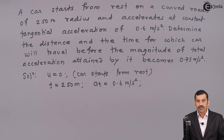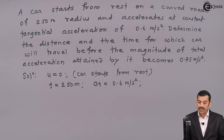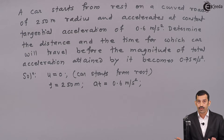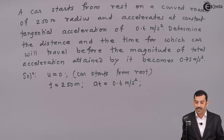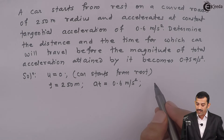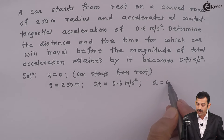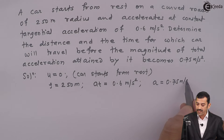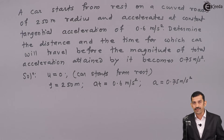So to summarize the given data: initial velocity u is 0, radius of curvature rho is 250 meters, tangential acceleration AT is 0.6 meters per second square, and the resultant acceleration A is 0.75 meters per second square.